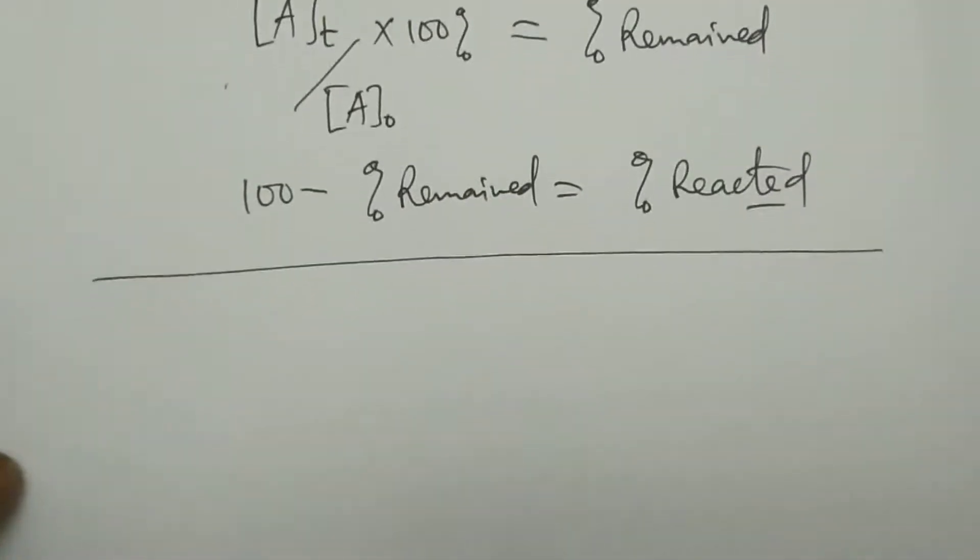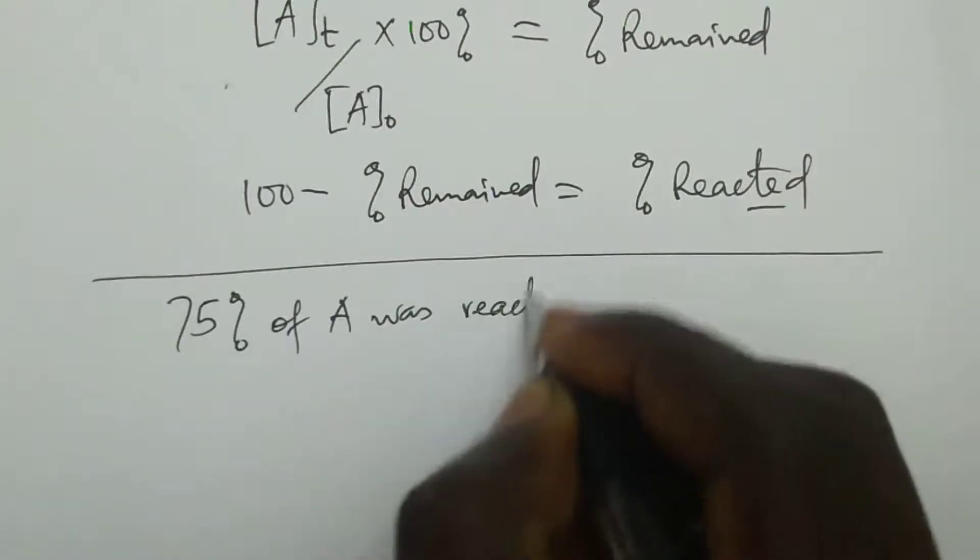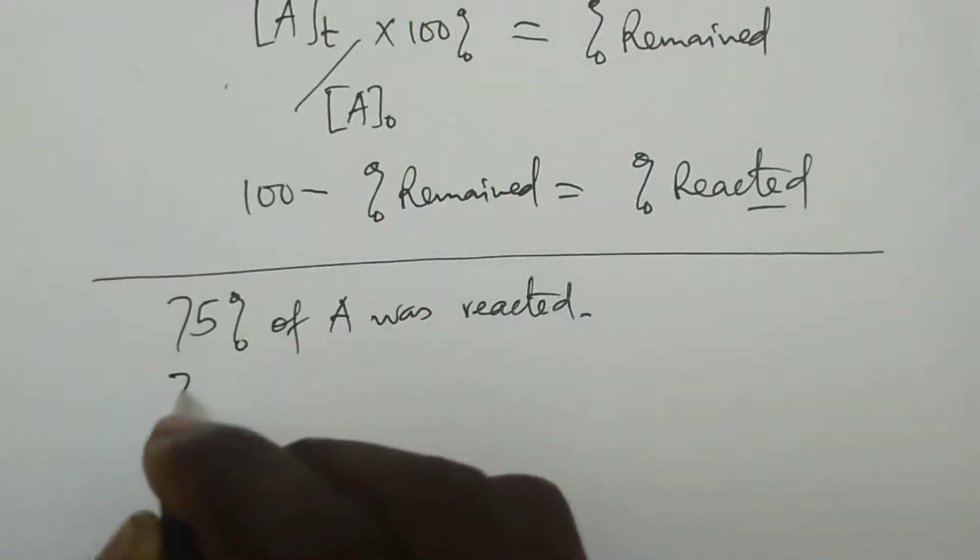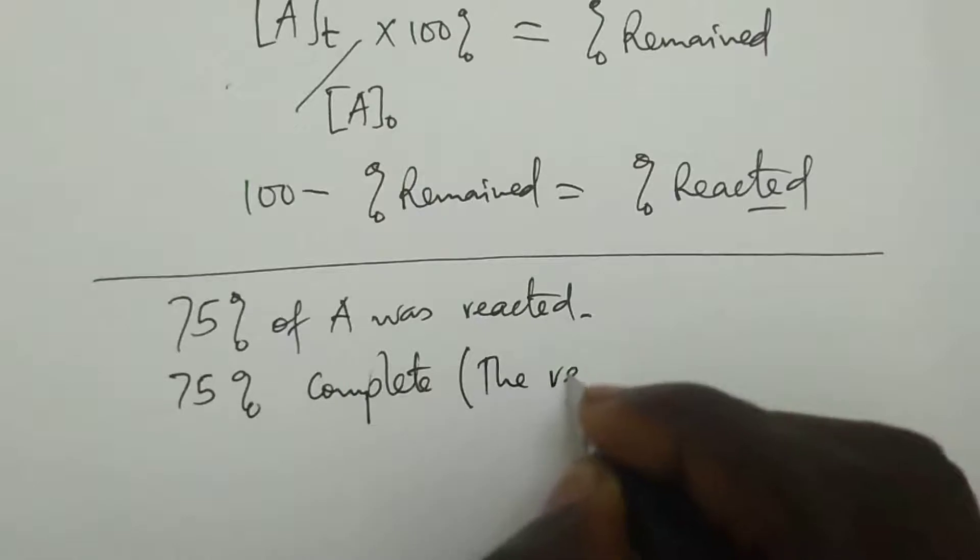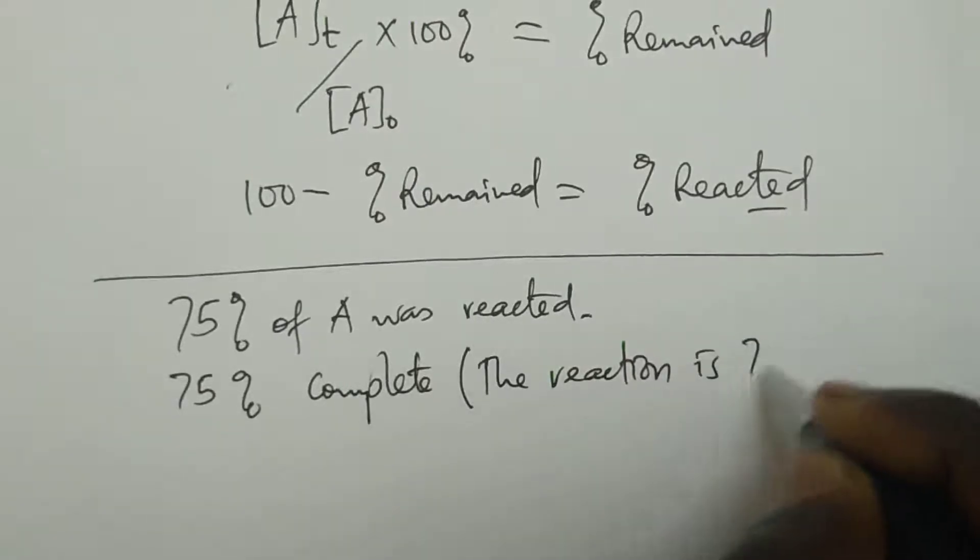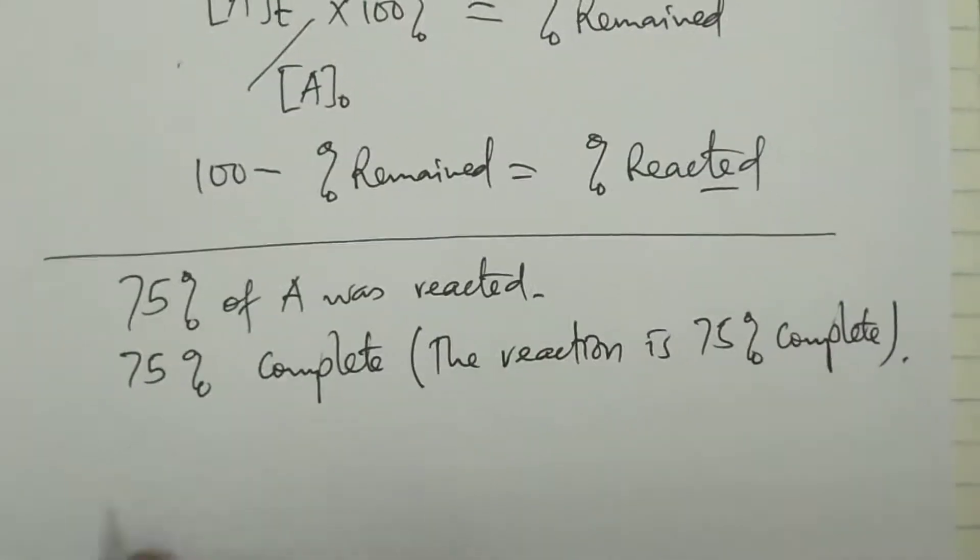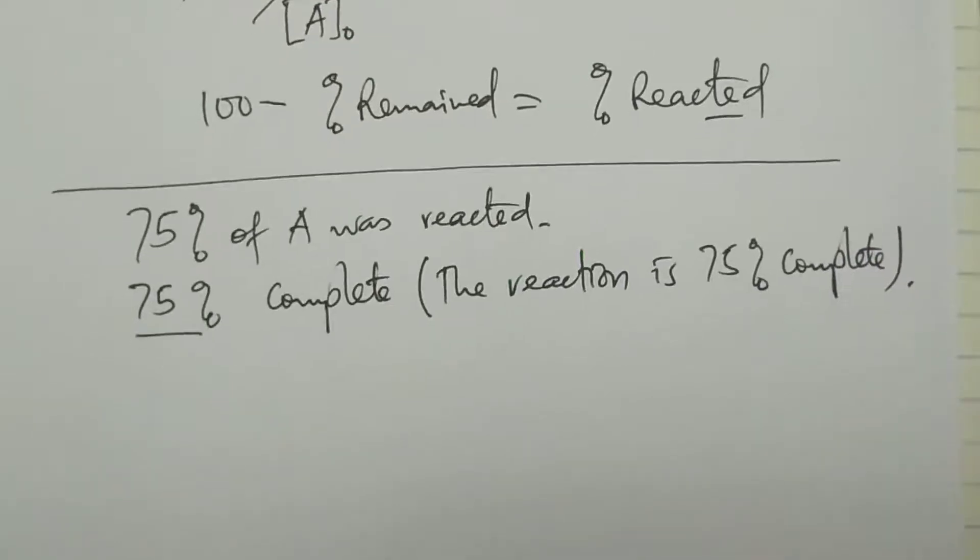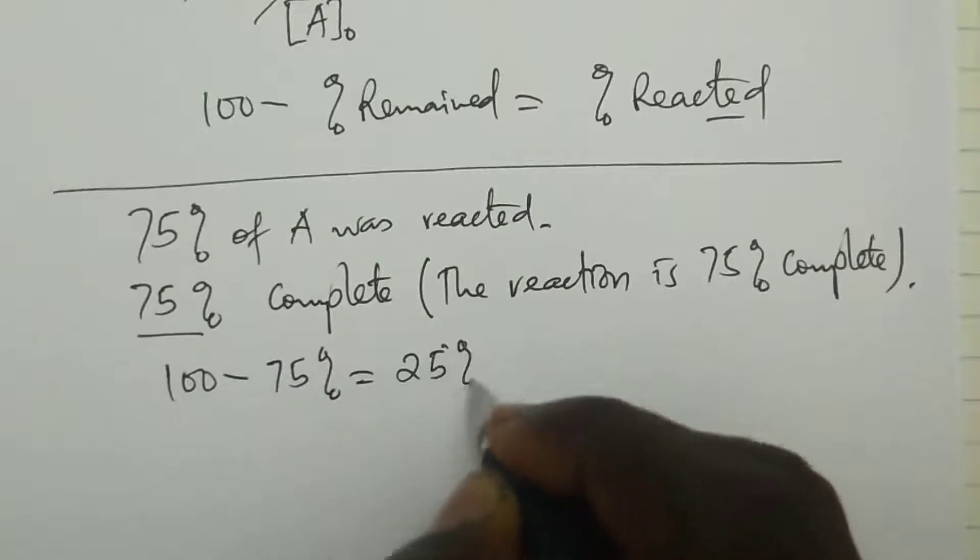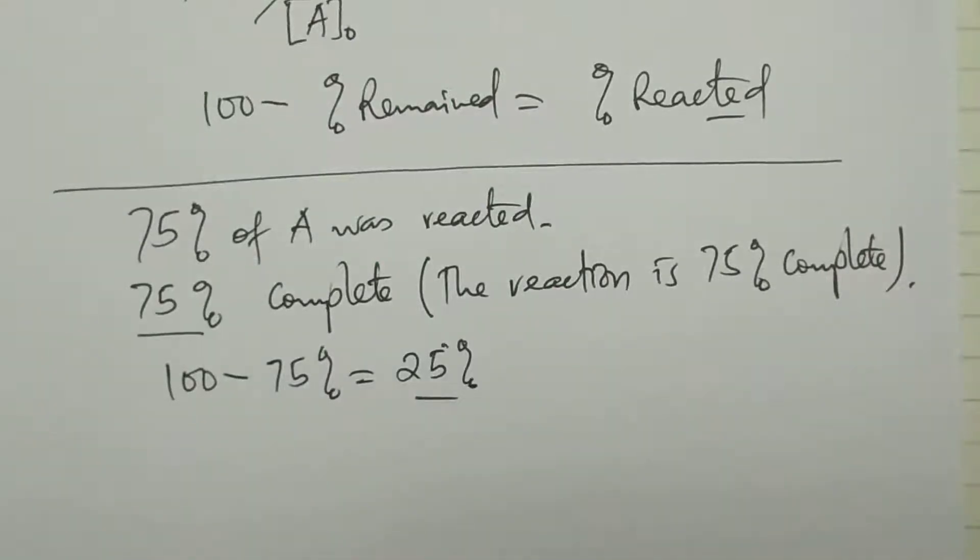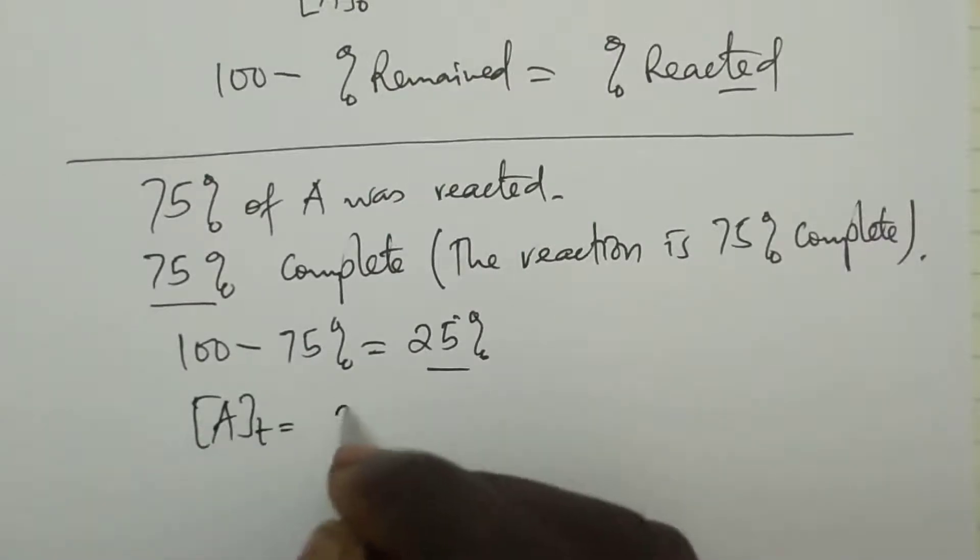You can be given in the question, for example, in the question, 75% of A was reacted. That means that 75% has reacted. Or in another way, they tell you the reaction was 75% complete. Complete. They're saying it another way. The reaction is 75% complete. You see, all these ways mean that 75% of A has reacted. If we want percentage remained, it will be what? Percentage remained means it's 100 minus percentage reacted, 75%, so it becomes 25%. 25% is what remains. But we know total percent of A was 100. That means what remains, a concentration Aₜ, which we are talking about is 25%, that's what remains.